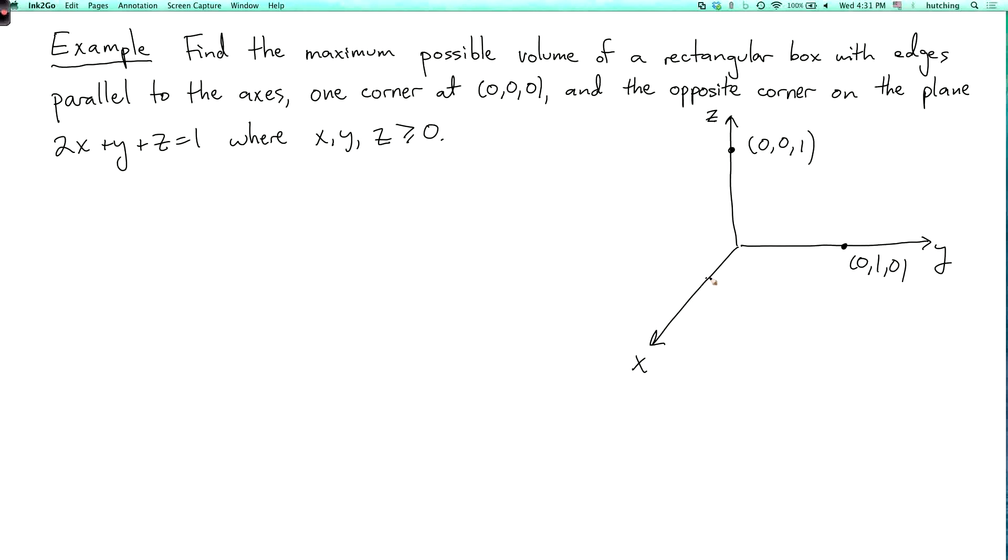And here's the point (1/2, 0, 0). So these three points are all on this plane. And the part of the plane where x, y, and z are greater than or equal to 0 is a triangle like this.